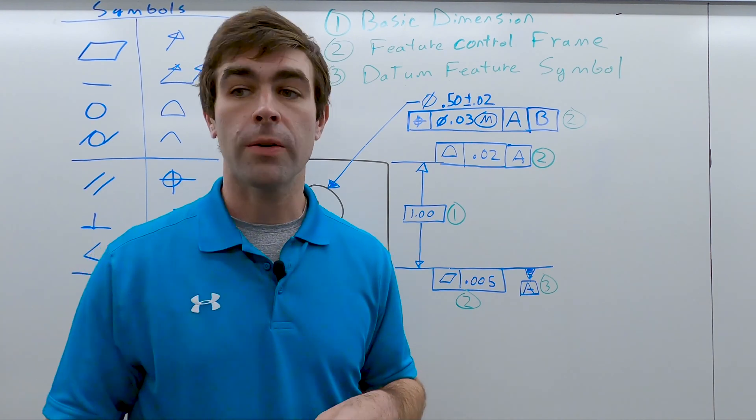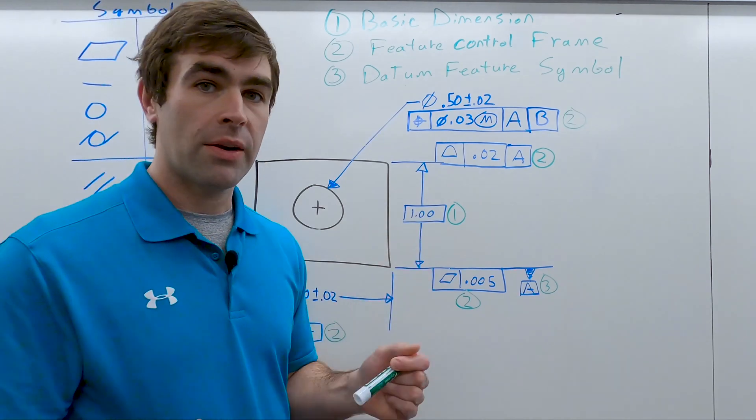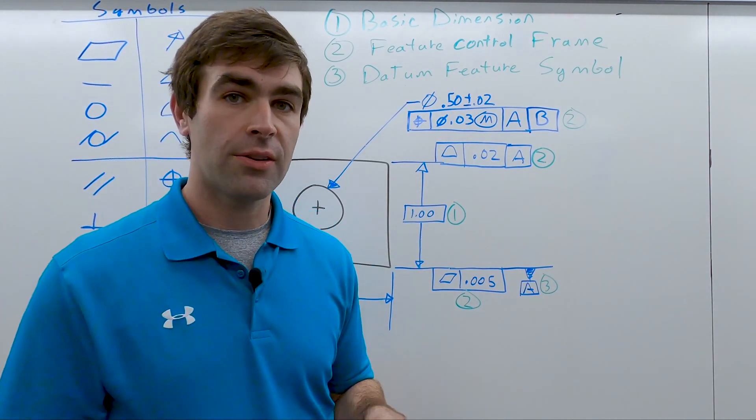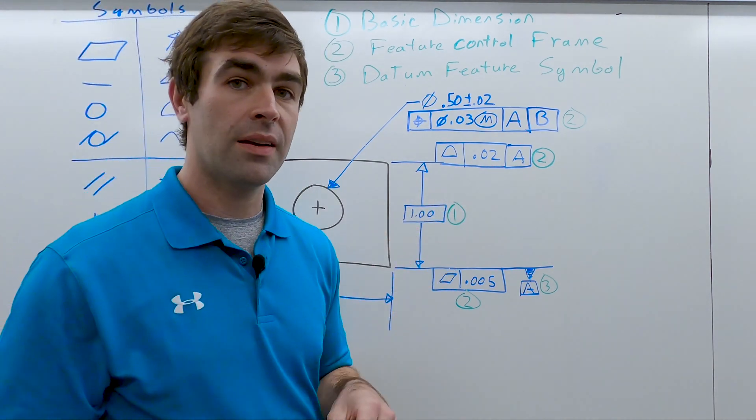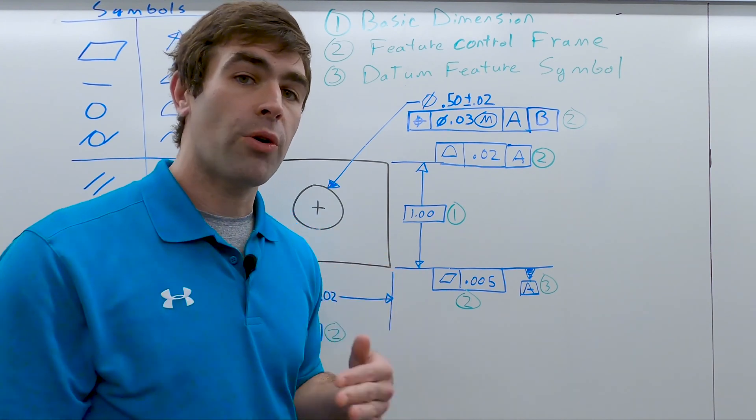Now this is important because when you go to inspect this part, this won't be on your inspection sheet. You're inspecting the geometric tolerance. So when you see a basic dimension, you should automatically think, where's the feature control frame?